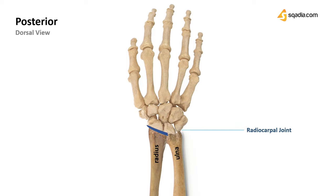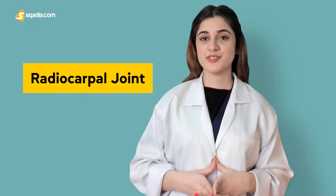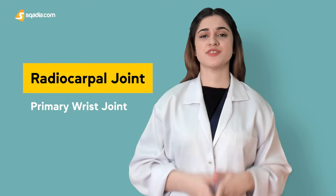This proximal wrist joint is formed by the articulation of three carpal bones — scaphoid, lunate, and triquetrum — with the radius. The distal wrist joint, also called the midcarpal joint, is present between the proximal and distal rows of carpals. In general language, the radiocarpal joint is usually termed as the primary wrist joint.